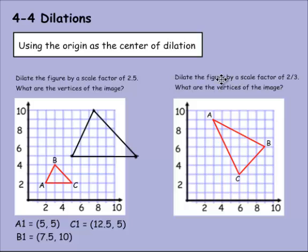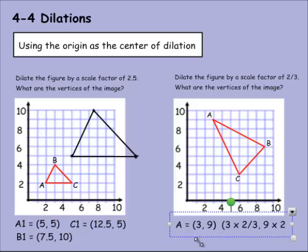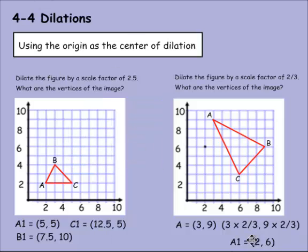Here the scale factor is 2 over 3. We have A, B, and C. The scale factor is less than 1, so this is going to become a smaller figure. We multiply times the scale factor. A is 3 and 9. So 3 times 2 thirds and 9 times 2 thirds. 3 times 2 is 6, divided by 3 is 2. 9 times 2 is 18, divided by 3 is 6. So A1 equals 2, 6. Since it's smaller than 1, it will end up closer to the origin, and that makes sense.